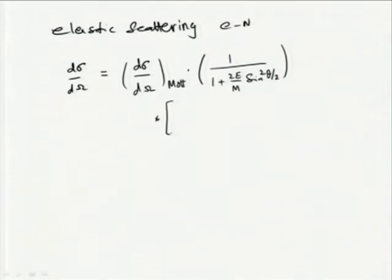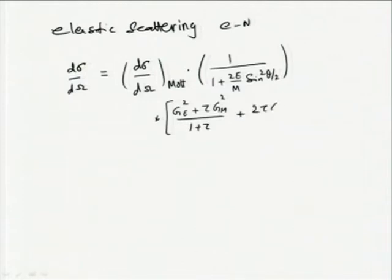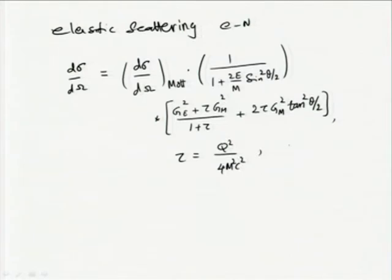The magnetic interaction part, which for a point particle corresponds to the magnetic dipole interaction. For particles which are not point particles, we have to consider form factors. There are two form factors: the electric form factor and the magnetic form factor. They appear in the expression for the differential cross section with a term plus 2τ G_M² tan²(θ/2), where τ = Q²/4m²c², and Q² = -q², with q being the four-momentum transfer.